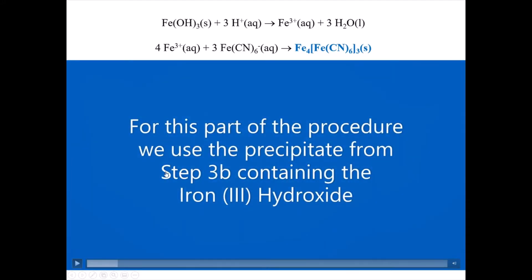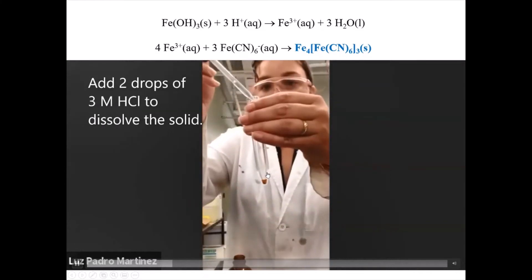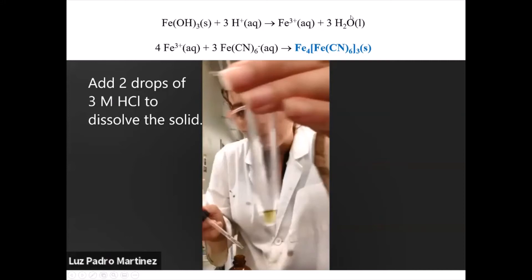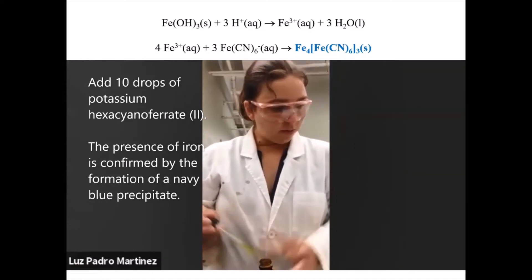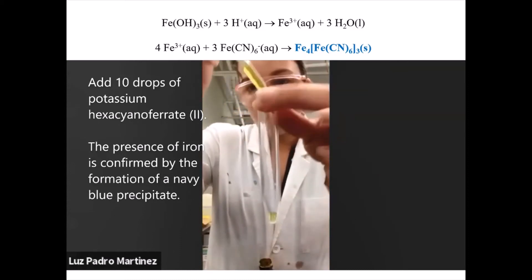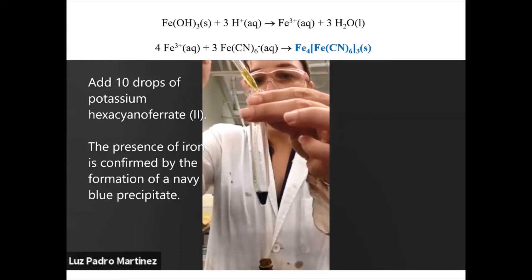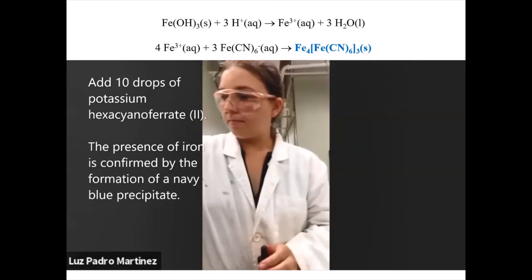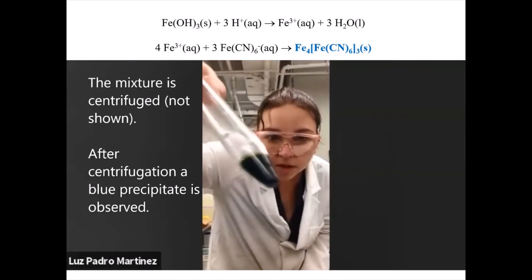In the video, she uses the precipitate from step 3B containing iron hydroxide. She adds acid and the solid dissolves immediately, giving a yellowish-brown color for the iron 3+ ion. Then she adds the hexacyanoferrate(II) indicator, and immediately the solution turns a rich deep navy blue. That navy blue precipitate—the blue suspension—confirms that iron is present. These steps represent both the separation and the confirmatory test for iron.